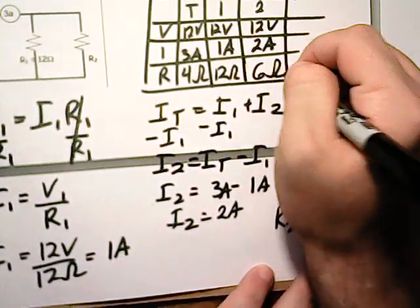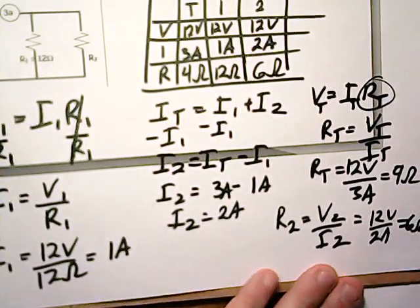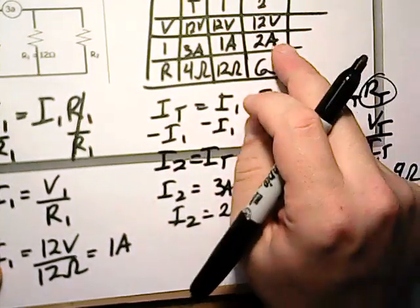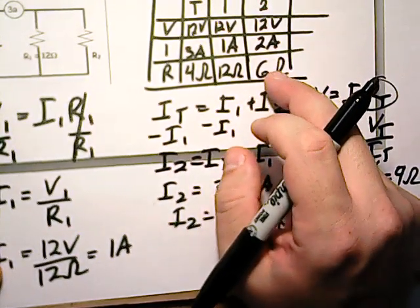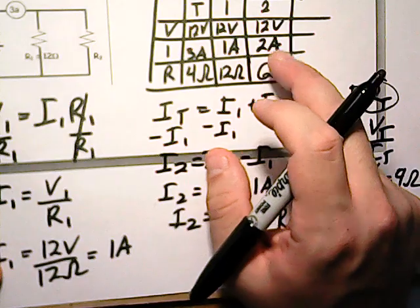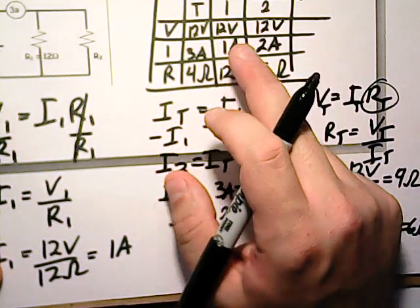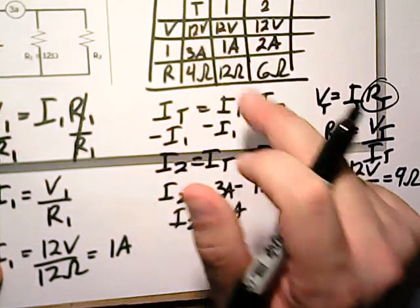So we get 6 ohms here. Or you can just look at it this way to figure out this missing piece: this times 2 would give us 12, so 6 times 2 gives us 12, 12 times 1 gives us 12, 4 times 3 gives us 12.